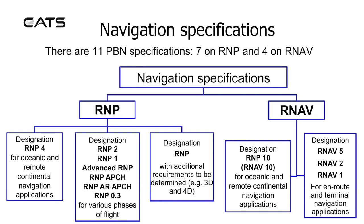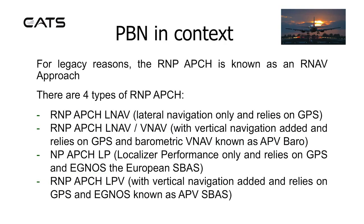such as 3D and 4D, will be included. For area nav, there is designation RMP10, also known as RNAV10, and designations RNAV5, RNAV2, and RNAV1.